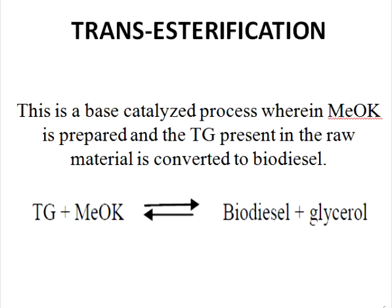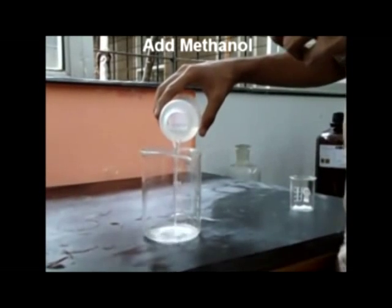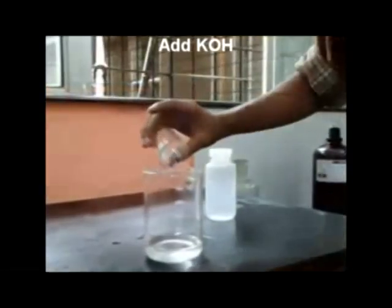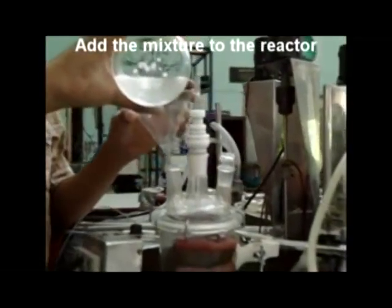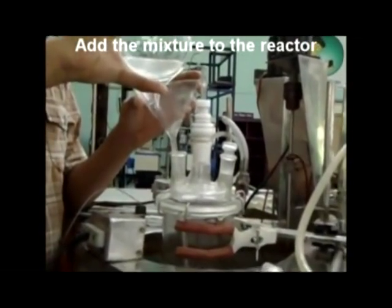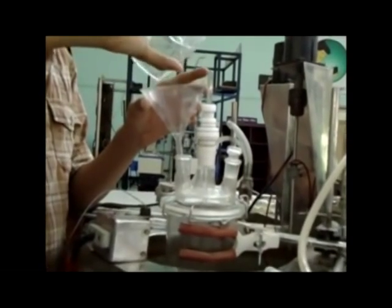Transesterification: This is a base-catalyzed process where potassium methoxide is prepared and the triglycerides present in the raw material are converted to biodiesel. Mix the required amount of methanol and potassium hydroxide in a beaker, mix them thoroughly, and pour the mixture into the reactor through a funnel. This ensures the formation of the methoxide anion, which acts as the nucleophile in the reaction.